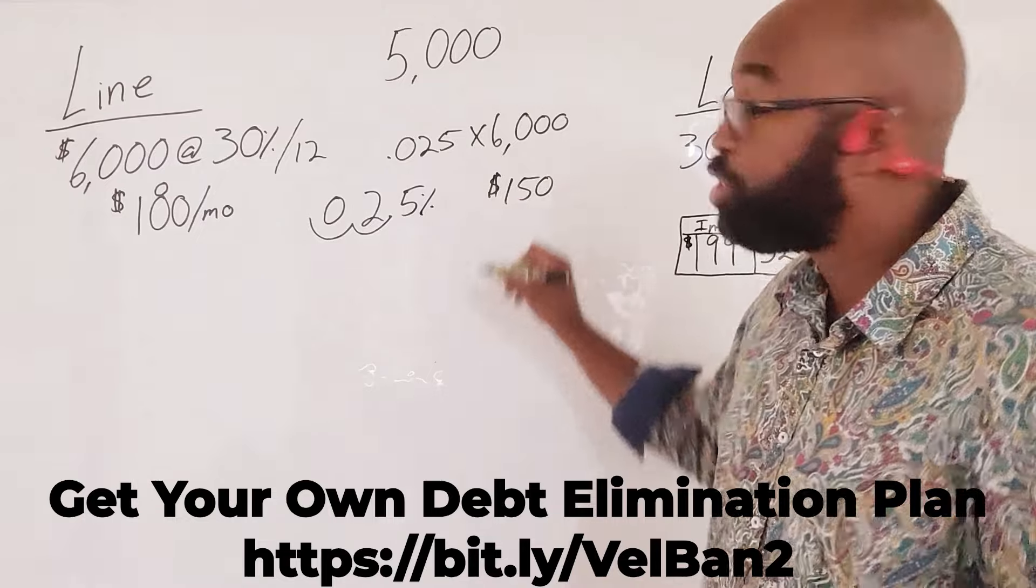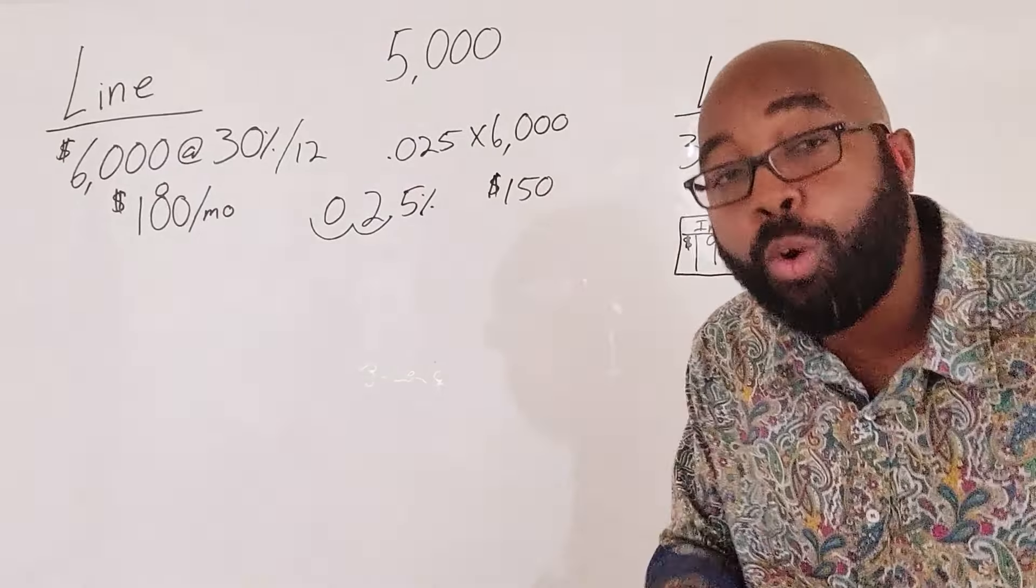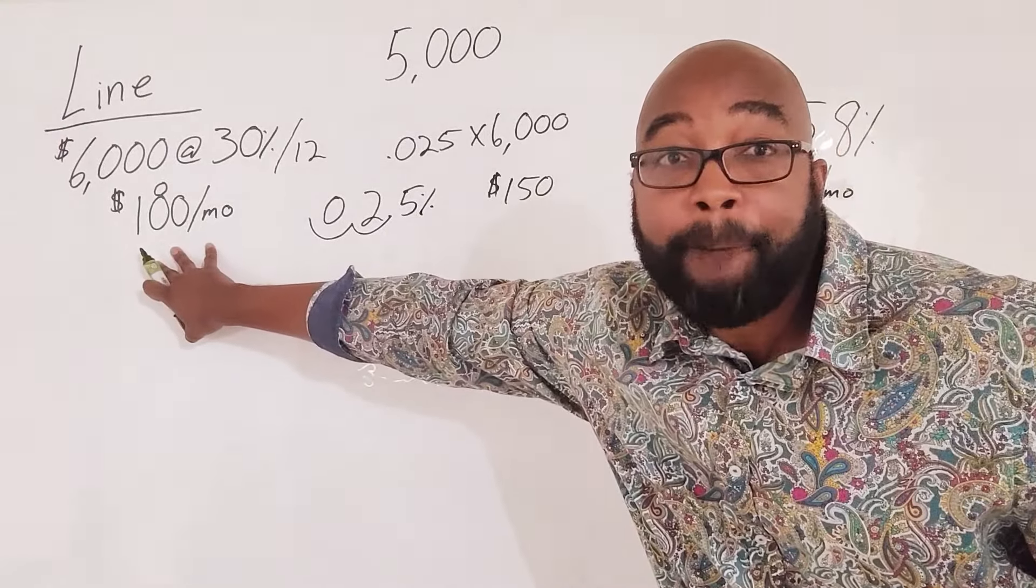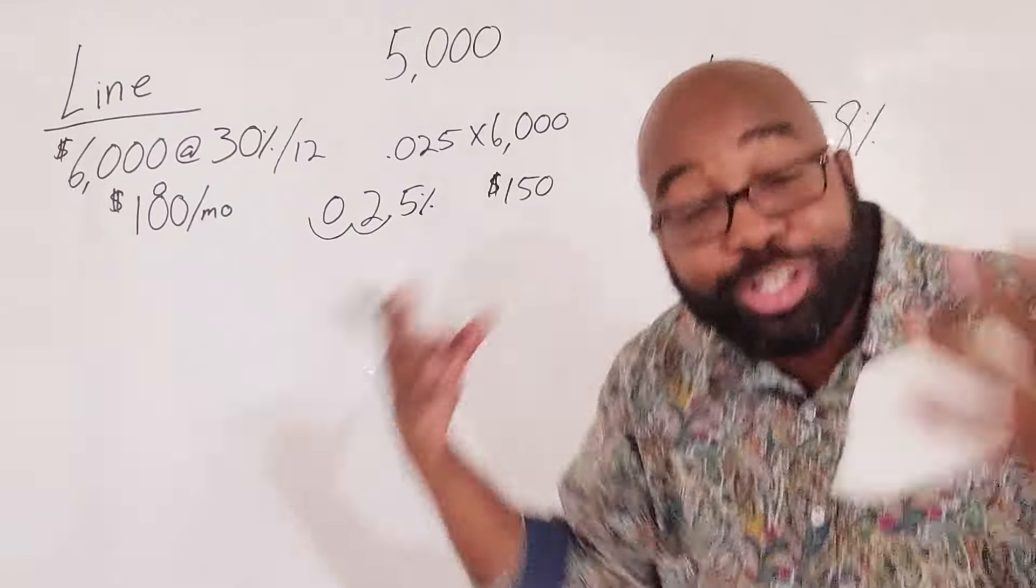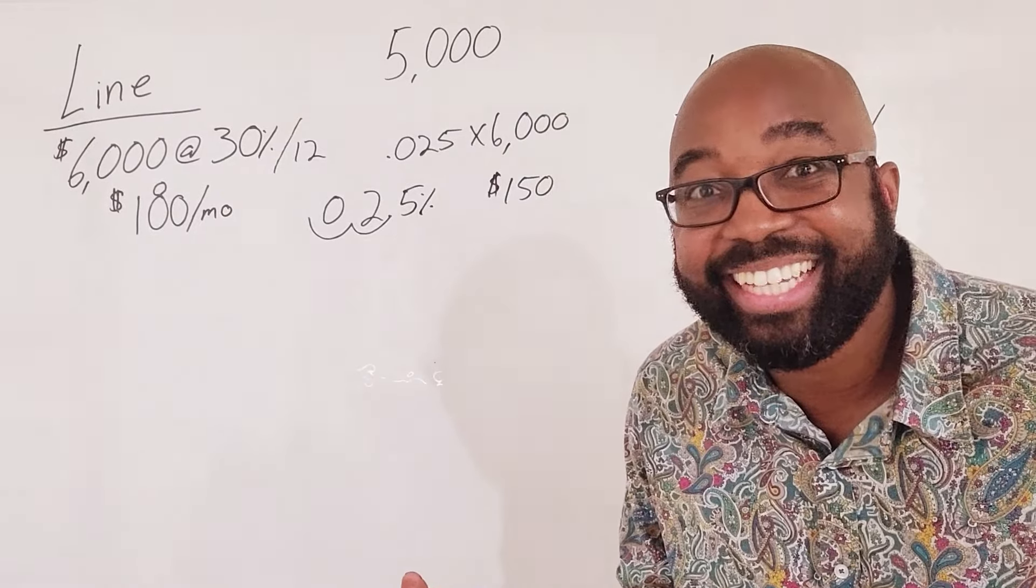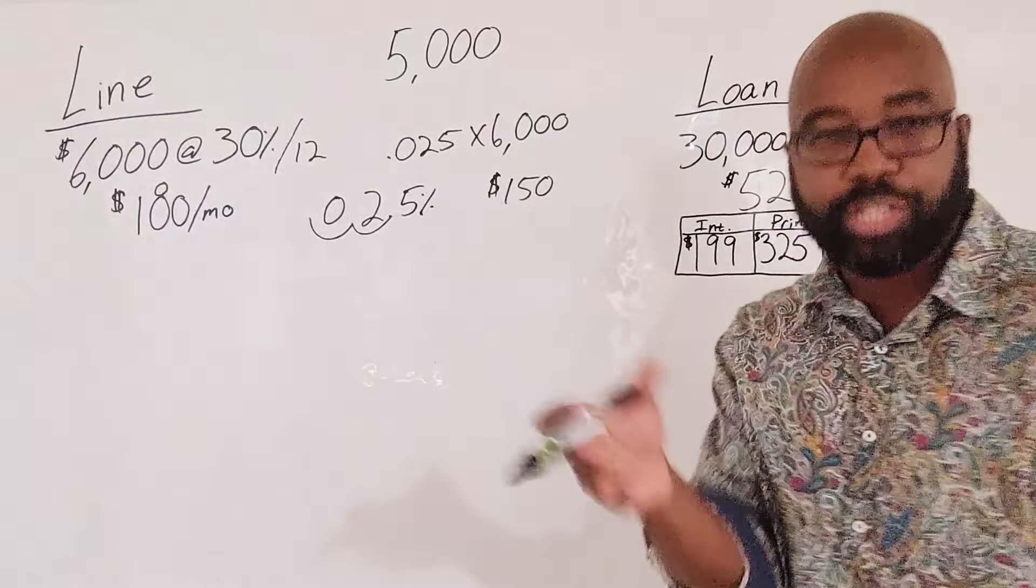You'll come up with $150. That's how much is going towards interest, which means what? How much of this is going towards principal? $30. Doesn't using the line of credit sound like a good idea now as your new checking account? That's why we do it, to get rid of all that mess that they got you guys going through.